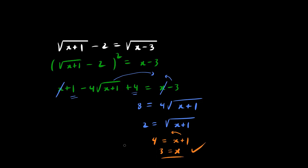You can verify the answer. When x is 3, we have 3 plus 1, which is 4. The square root of 4 happens to be 2. 2 minus 2 is 0, so the left side equals 0. And when x is 3, we have 3 minus 3, which is 0. The square root of 0 is still 0, so the right side is also 0.